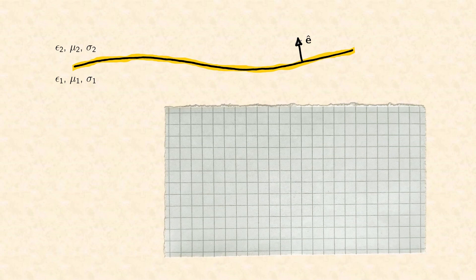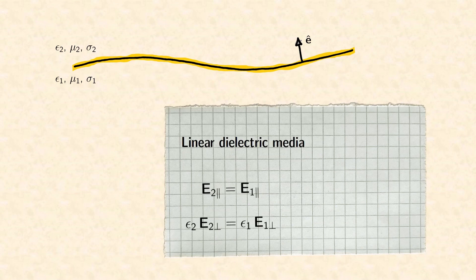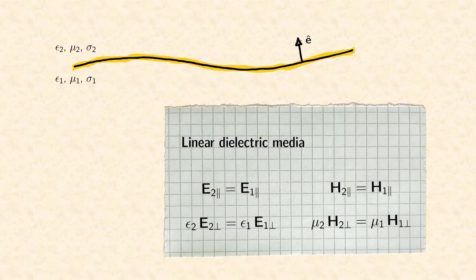Displacement field and electric field are linked by the permittivity of the respective materials. And therefore the boundary condition on the displacement field can easily be transferred to the electric field. In the important case of linear dielectric materials we can just replace D by epsilon times E. The same is the case for the connection between magnetic field and magnetic induction. Thus we have finally received the rules to calculate the electric and magnetic field at any point of the interface in medium 2 from the respective field at the same point on the other side of the interface. Starting with these values we can then again use the wave equation to calculate the field everywhere in medium 2.